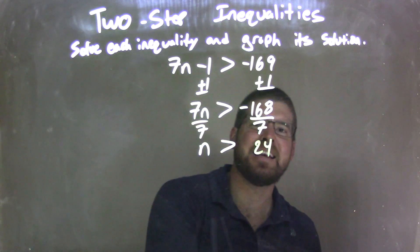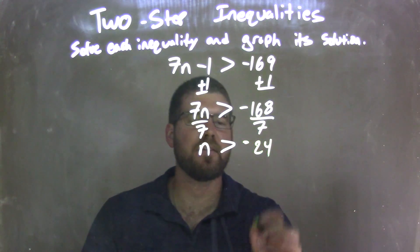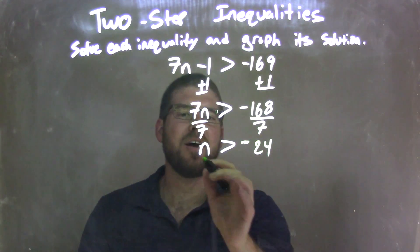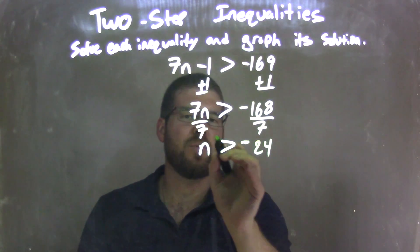Now we know that's going to be negative 24, because a negative divided by a positive is a negative. And so now I have n by itself is greater than negative 24.